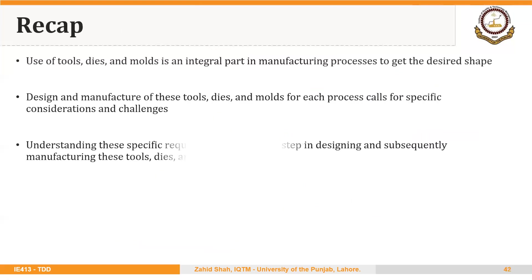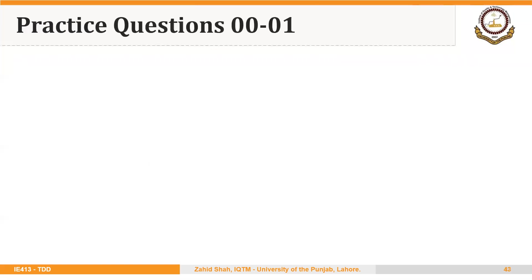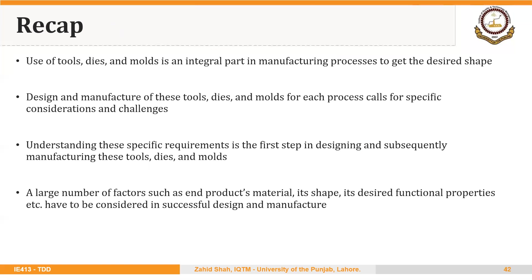So in this lecture we very quickly and briefly saw the use of tools, dies, and molds in different operations — they are an integral part of manufacturing processes to get the desired shape. Design and manufacture of these tools, dies, and molds calls for specific considerations and challenges, and understanding these requirements is the first step in designing and subsequently making them. A large number of factors such as end product's material, shape, and desired functional properties have to be considered in successful design and manufacture. So we very quickly saw where different types of production tooling are used in a manufacturing system.